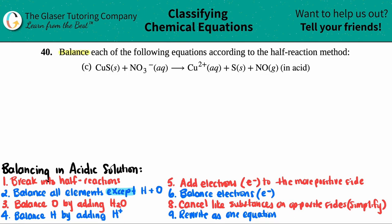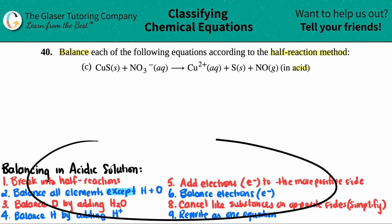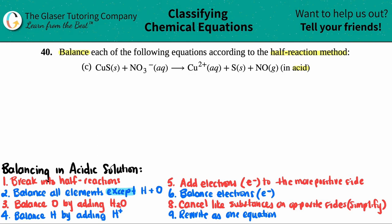Number 40, balance each of the following equations according to the half-reaction method — letter C. We have to balance CuS solid plus NO3⁻ which yields Cu²⁺ plus S plus NO, all in an acidic solution. I gave you all the steps for balancing a redox reaction in acidic solution, so just follow them in order — step one, step two — that's the easiest way.